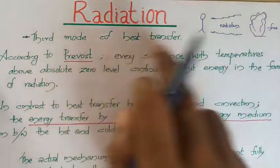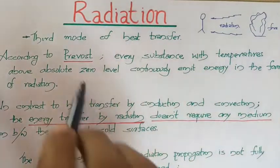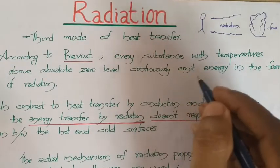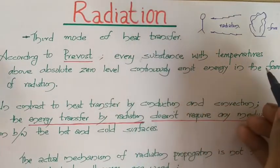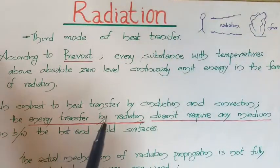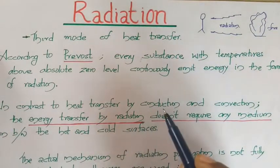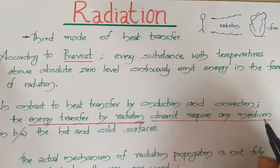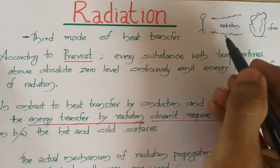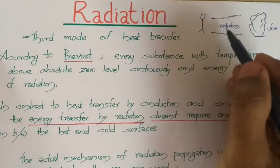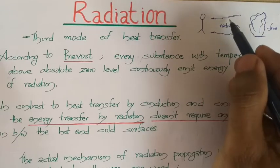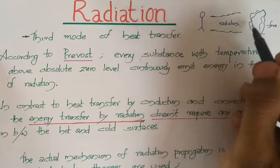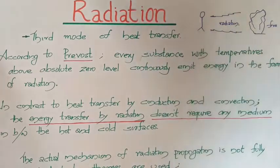This is the third mode of heat transfer. According to Prevost, every substance with a temperature above absolute zero will continuously emit energy in the form of radiation. In contrast to conduction and convection, radiation does not necessitate any presence of a medium. Between a person and fire, even if the space is evacuated, radiative heat transfer will still occur between the hot and cold bodies.